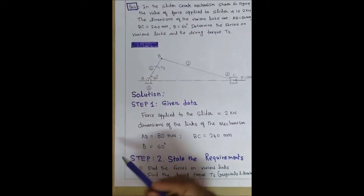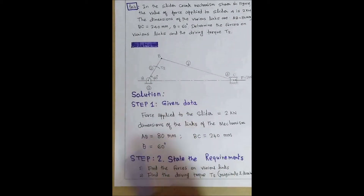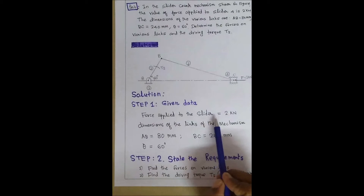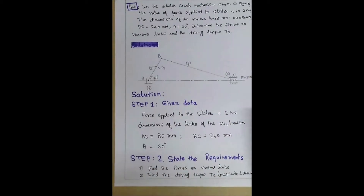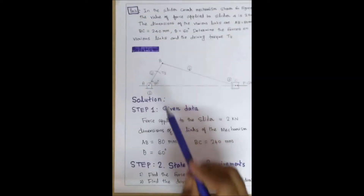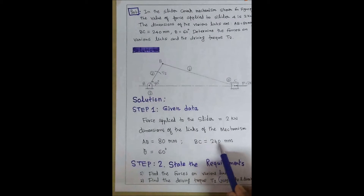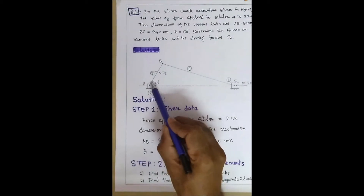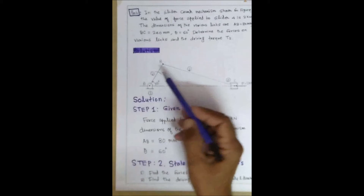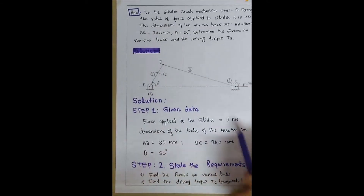Step 1 — given data. The force applied to the piston is 2 kN. The dimensions of the links are: AB = 80 mm, BC = 240 mm. The crank angle theta, which is the angle the crank makes with the horizontal, is 60 degrees. These are the given data.